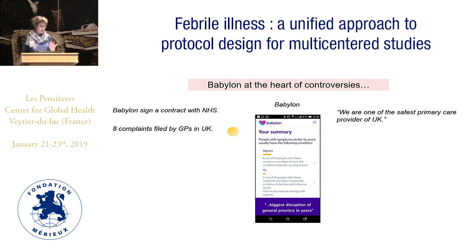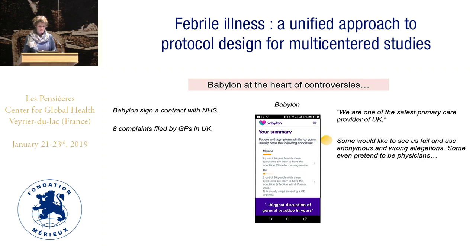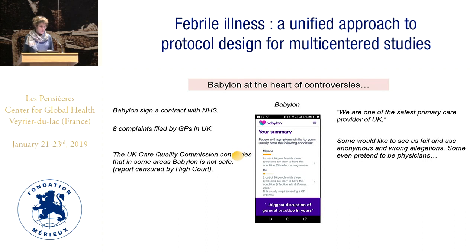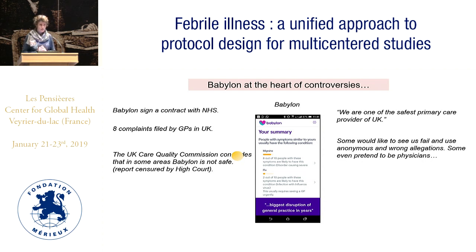They put in complaints because several very important diagnoses were not coming out with the app. What did Babylon respond in the newspapers? 'Some would like to see us fail and use anonymous and wrong allegations. Some even pretend to be physicians.' In fact, they were physicians. The NHS became worried and asked the UK Care Quality Commission to evaluate it. They produced a big report saying Babylon was probably not safe in some areas, but that report was censored by the high court on request of Babylon.